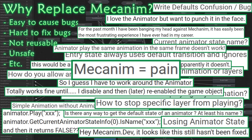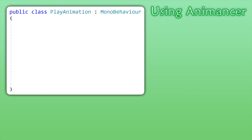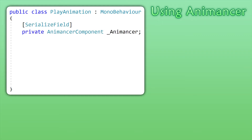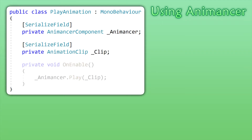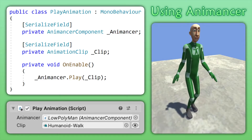Animator avoids those problems by allowing you to play animations on demand and control them fully in code. Basic usage is very simple. You get an object and an animation, then you just play it. Attach that script, assign its references, and watch it play.